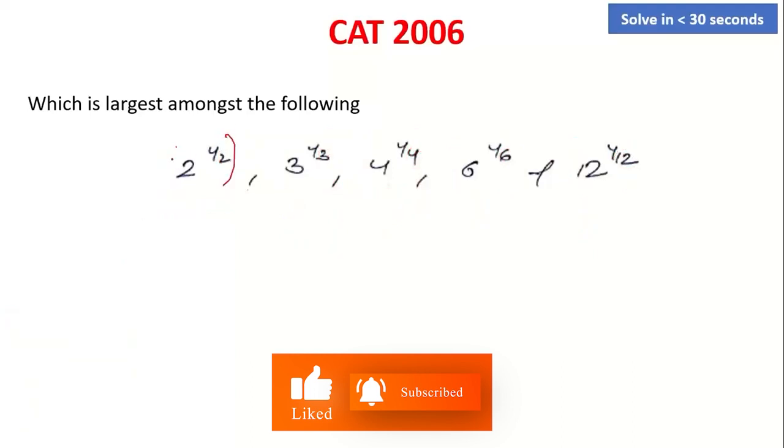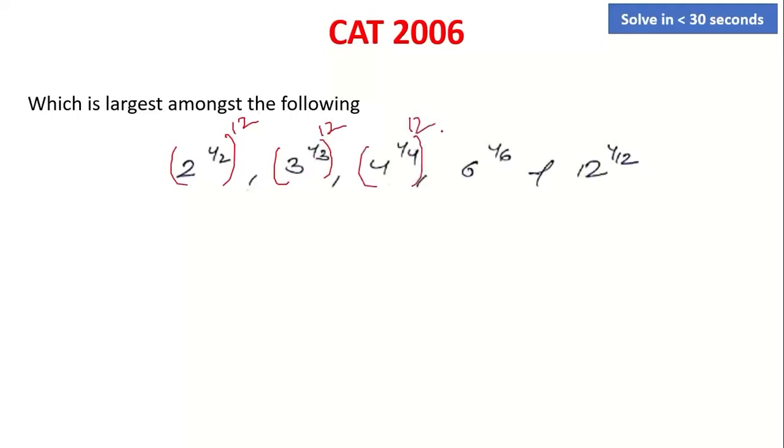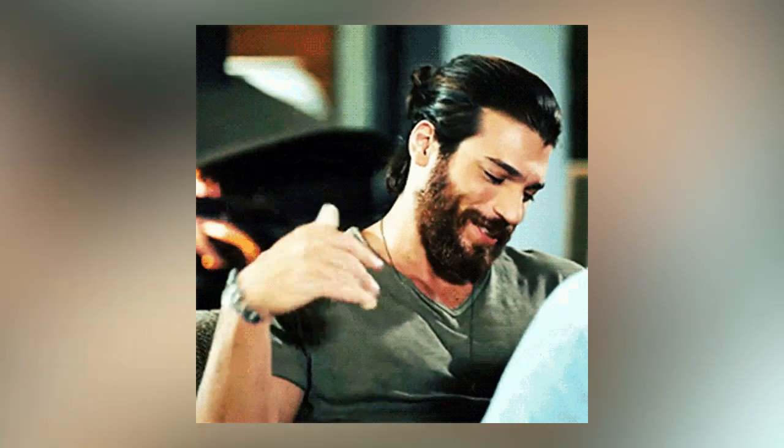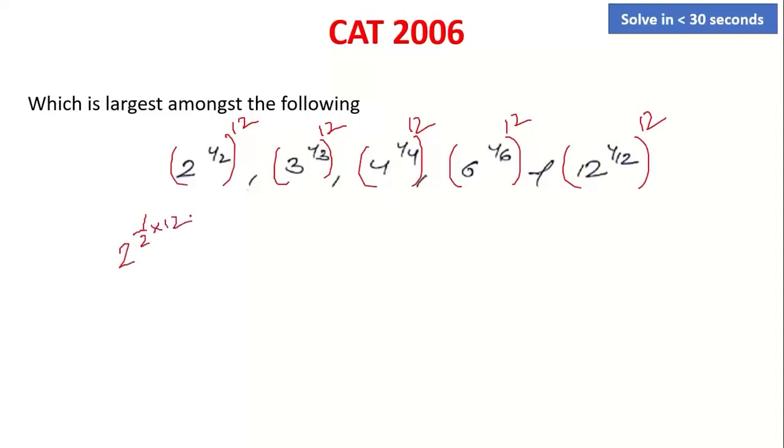This will become 2 raised to power 1/2 raised to power 12. 3 raised to power 1/3 raised to power 12. 4 raised to power 1/4 raised to power 12. 6 raised to power 1/6 raised to power 12. 12 raised to power 1/12 raised to power 12. Let's solve them. 2 raised to power 1/2 times 12. 3 raised to power 1/3 times 12. 4 raised to power 1/4 times 12. 6 raised to power 1/6 times 12. 12 raised to power 1/12 times 12. 12 and 12 cancel. 6 raised to power 2. 4 times 3 is 3. 3 times 4 is 2. 2 times 6 is 6.